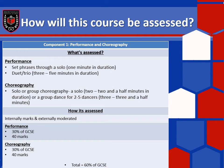The performance element of your exam is worth 30% of your GCSE, which equates to 40 marks. The choreography element is also worth 30%, giving you a combined total of 60% of your GCSE from component one.